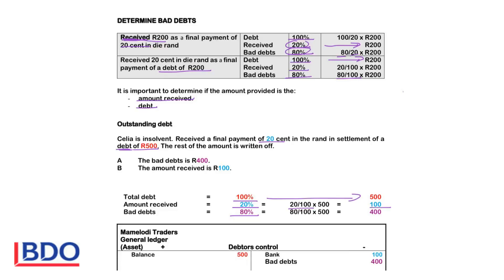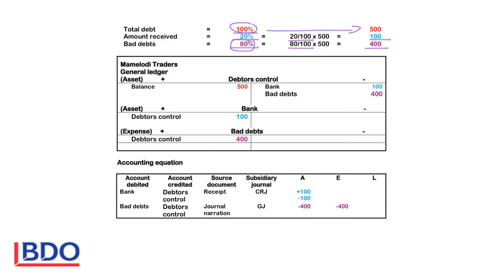And the bad debts will be 80% of 500 — because the percentage I want, 80, at the top, divided by the percentage I know, 100, at the bottom, times 500 — will give me 400 rand. The balance is 500 rand.